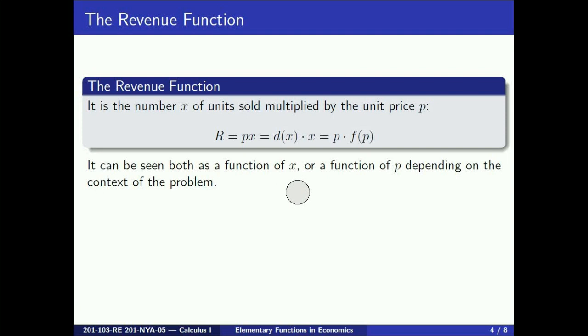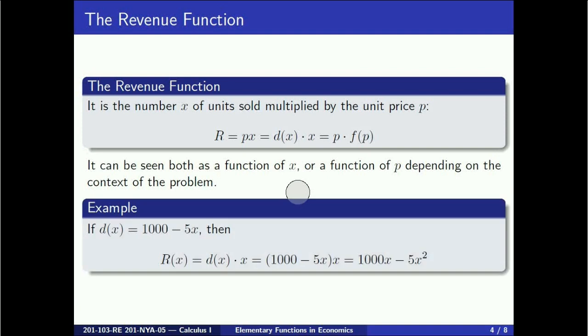Continuing our last example, if d(x) is 1000 minus 5x, then R(x) is 1000 minus 5x, which is the unit price, times x, and that equals 1000x minus 5x squared.